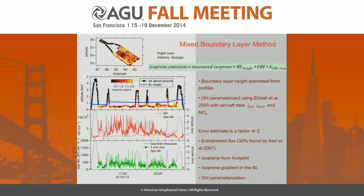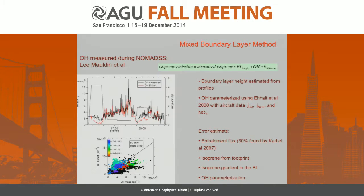Five-minute averages are used because of the natural variability of isoprene, making it very hard to compare one-second measurements with each other or with models. This method does have considerable error: the entrainment flux out of the boundary layer could be as high as 30 percent; the isoprene measured at the aircraft comes from a certain region and not right under the aircraft as assumed; OH ages differently along the footprint; isoprene has a gradient throughout the boundary layer due to its short lifetime; and the OH parameterization is a large source of uncertainty.